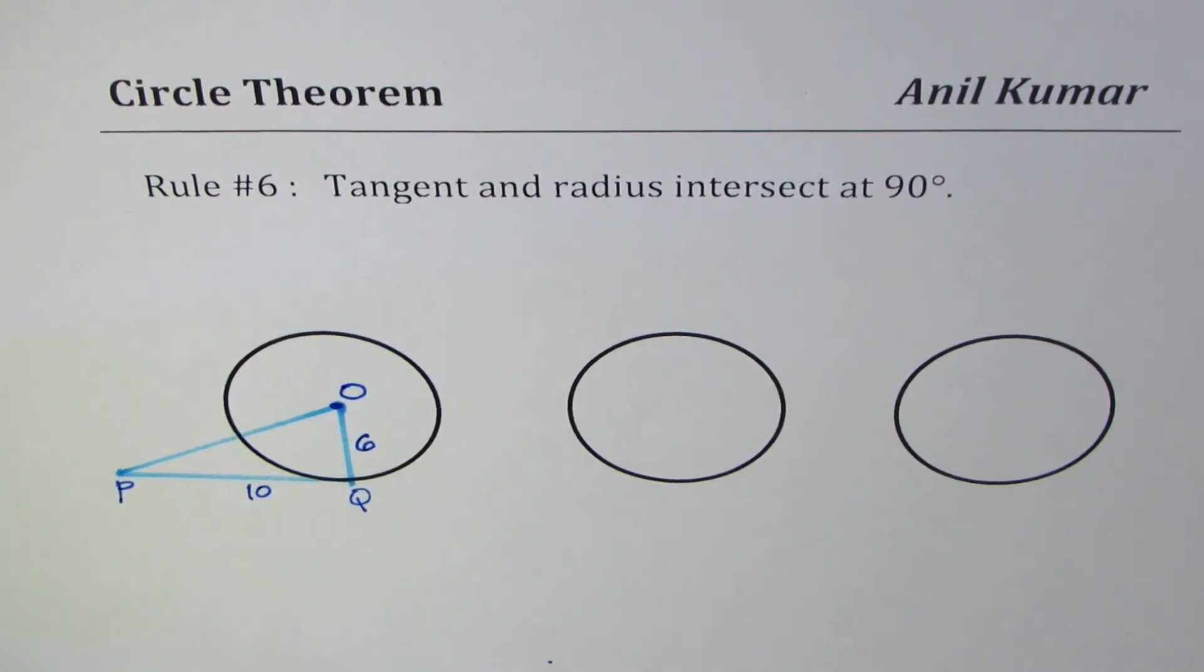I'm Anil Kumar, sharing with you some rules which help us solve questions relating to circles. The rule number six is: tangent and radius intersect at 90 degrees.